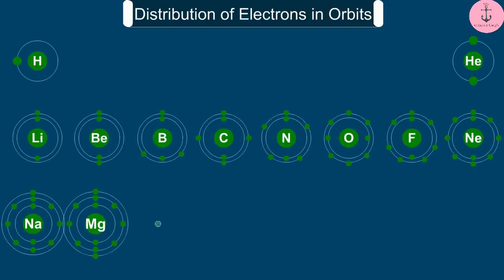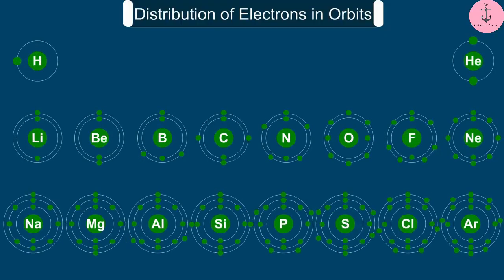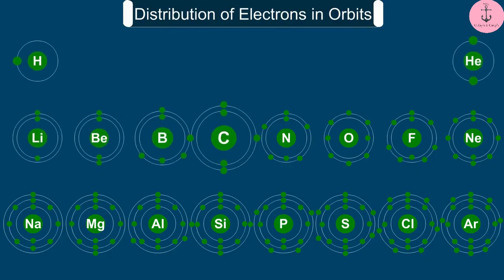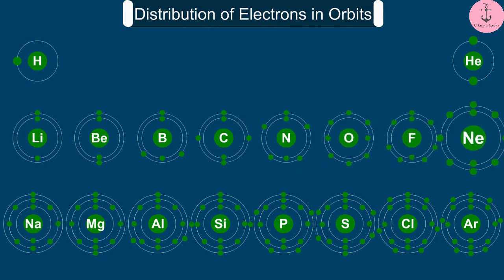Atomic structure of the first 18 elements is shown schematically here. We have learnt how the electrons in an atom are arranged in different shells or orbits.